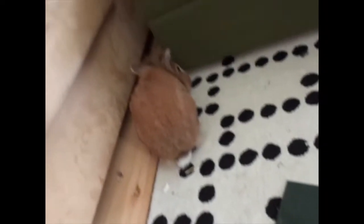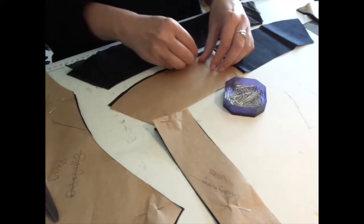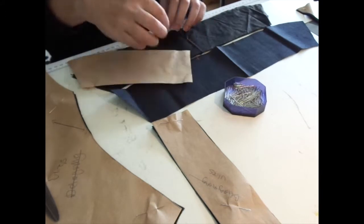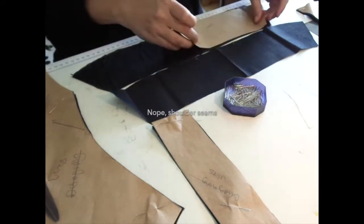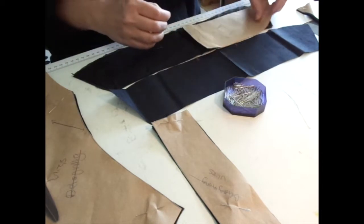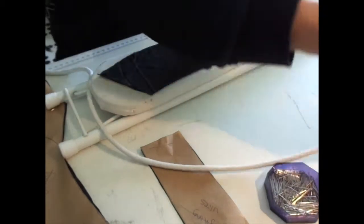It's a Regency Spencer jacket we are making. Starting off with the collar, marking center back, both on the basting and on the collar itself.